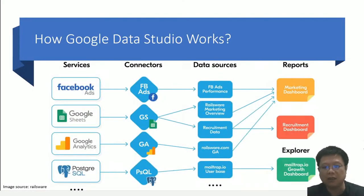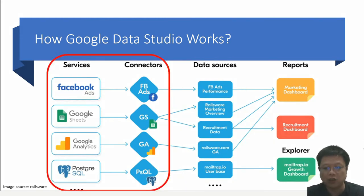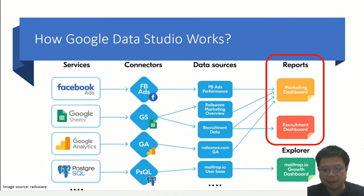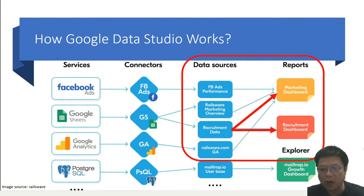There are four major concepts in Google Data Studio that everyone should know. Let's look at the data source. It allows users to import data from various sources. The sources may come from services such as Facebook Ads, Google Sheets, Google Analytics, through third-party connectors. The imported data sources can be used to create reports or dashboards. The relationships between data sources and reports are many-to-many, meaning a report can be created from many data sources and many reports can be created from one data source.